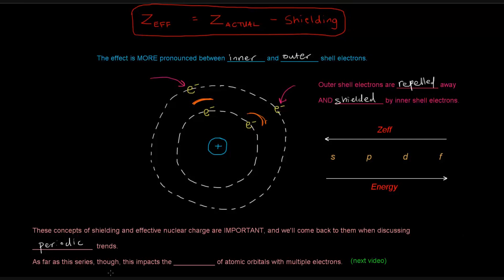However, as far as this series goes, this impacts the energy or the energies of atomic orbitals with multiple electrons. Because we said that the orbitals in hydrogen, which only has one electron,